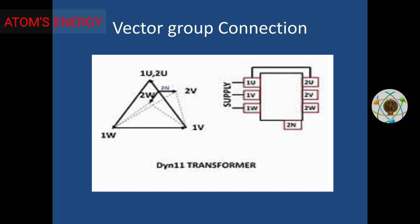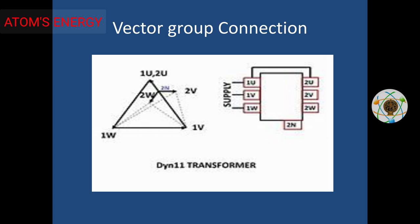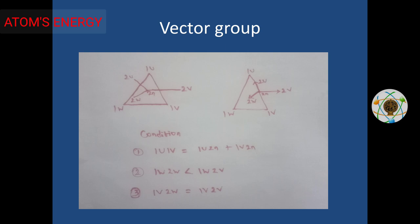The final test is the vector group. The vector group is DYN11. DYN11 has a vector group as shown on the nameplate. If you apply to the vector group test with 2kV applied to the secondary connection, there are 3 conditions. If all 3 conditions are satisfied, you have DYN11.